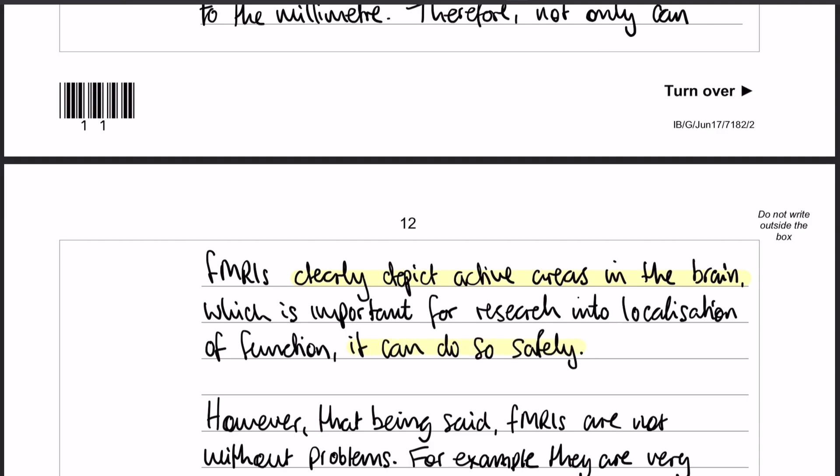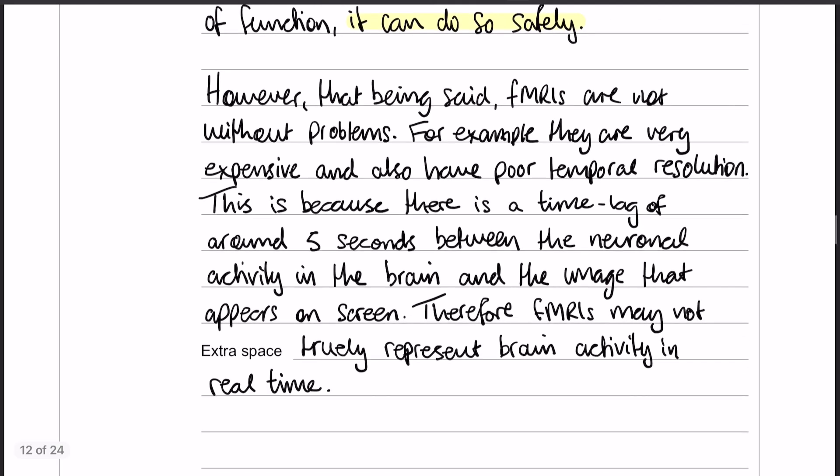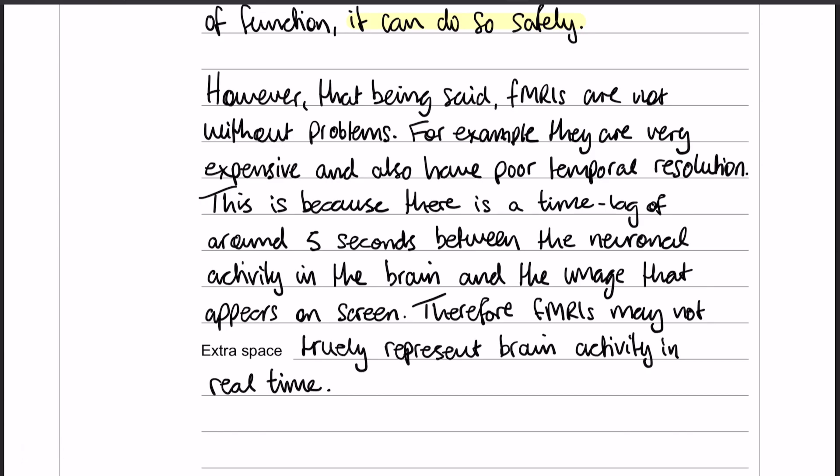So you see how I've got one conclusion sentence that brings it all together. And then my limitation is slightly shorter, but that doesn't matter. We've got one bit of limitation, which is that it is expensive, so that means it's not necessarily always going to be available to everybody. And then we also have poor temporal resolution. What does that mean? That means that there is about a five-second time lag between the neuronal firing in the brain and the image that appears on the screen, which means that it may not truly represent brain activity in real time.